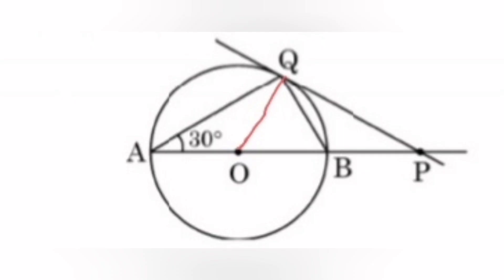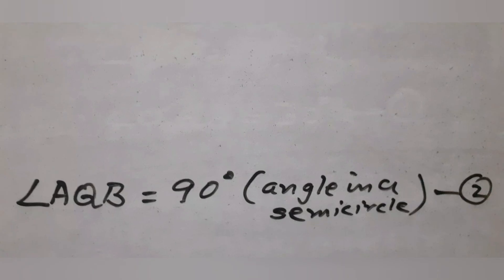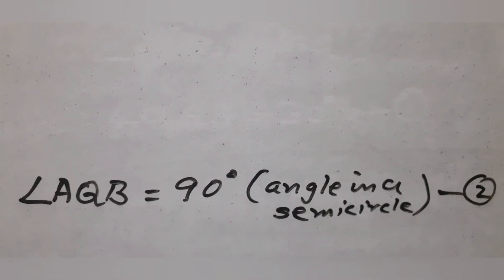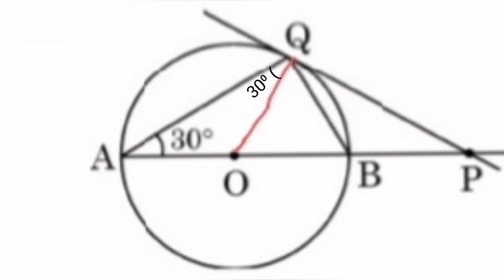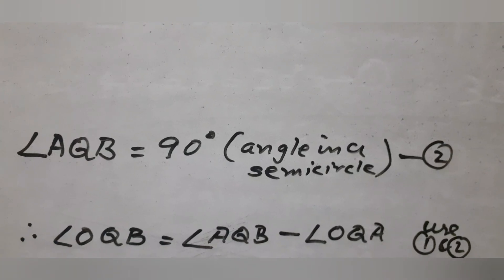AB is the diameter, so angle AQB equal to 90 degrees which is the angle in a semicircle. Angle OQB equal to 90 degrees minus 30 degrees which gives you 60 degrees.